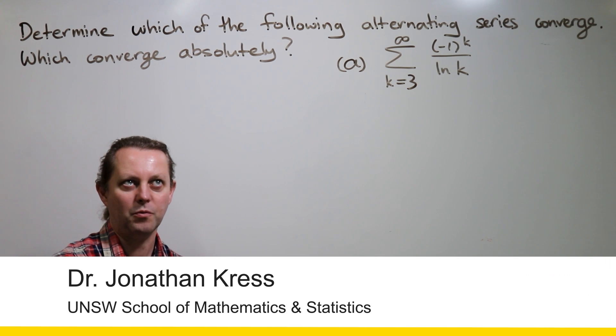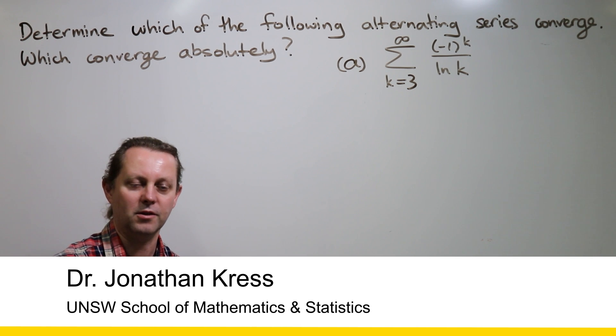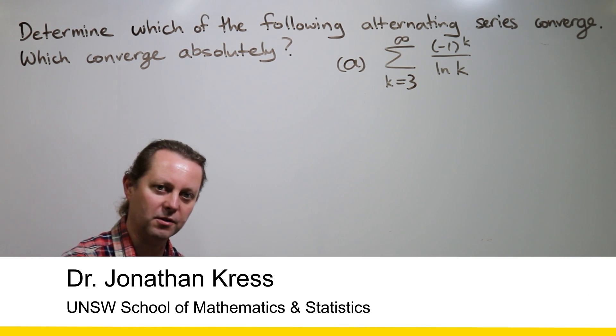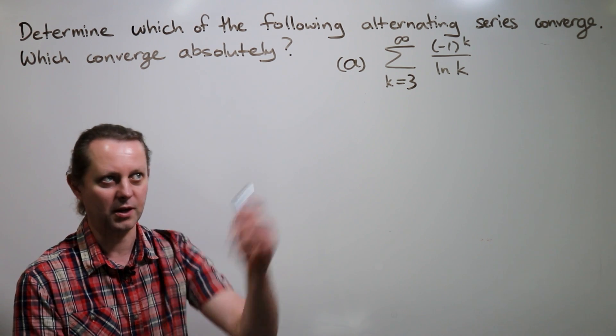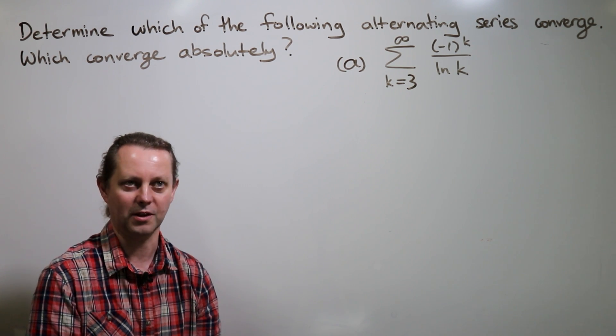For this question, we want to determine which of the following alternating series converge, and which ones converge absolutely. We've got one here already, A, and we'll move on to the other ones afterwards.